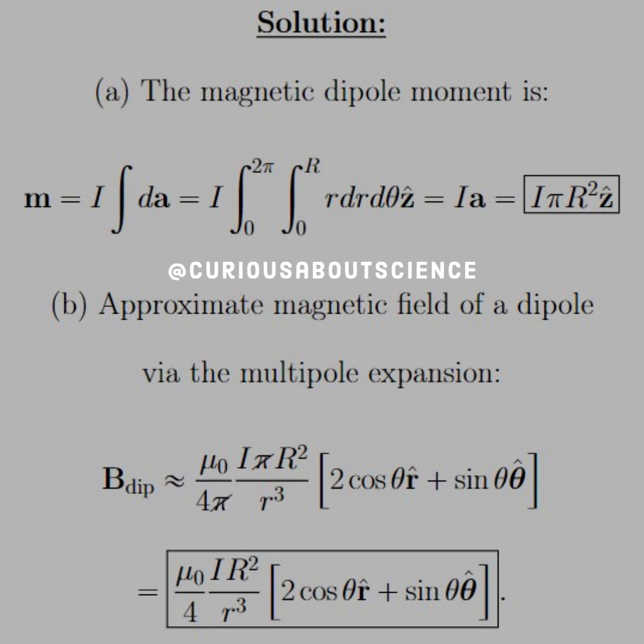And part B the approximate magnetic field of a dipole is given as the equation on our note page so when we plug in M we see that we have B dipole is approximately mu naught over 4 pi times I pi R squared over little r cubed. The pi's cancel and we're left with the brackets staying the same so this is our approximate form, same thing just without the pi's.